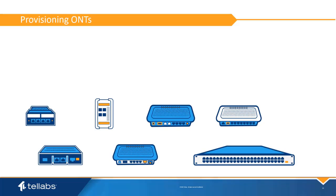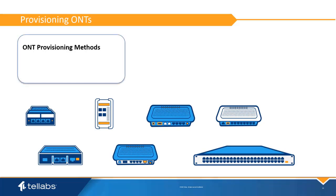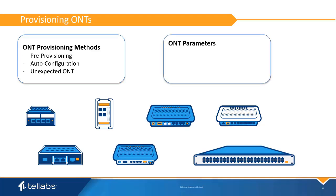Panorama provides several ways to provision ONTs. ONTs can be added through pre-provisioning, either individually or via bulk configuration, auto configuration, or by using the unexpected ONT feature using pre-installed ONTs. Each ONT is provisioned to a specific address using an ONT type, serial number, and an ONT label.